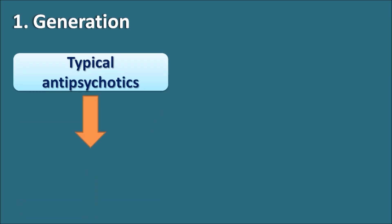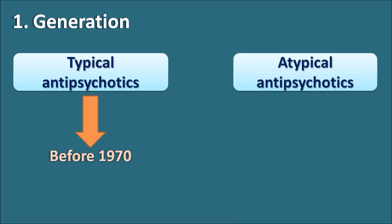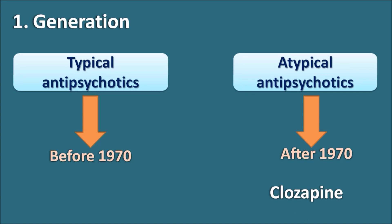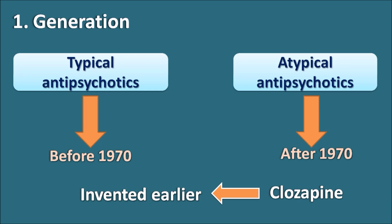Typical antipsychotics were developed before 1970, whereas atypical antipsychotics were developed after 1970. So typical antipsychotics are old-generation drugs and atypical antipsychotics are new-generation drugs. There is an exception to this classification — for example, clozapine was invented before 1970 but is still considered an atypical antipsychotic.